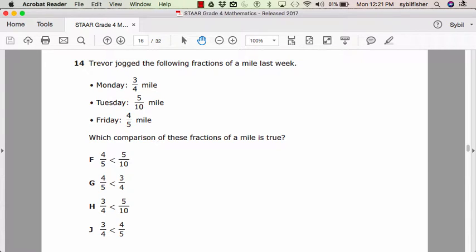F, four-fifths is less than five-tenths. G, four-fifths is less than three-fourths. H, three-fourths is less than five-tenths. Or J, three-fourths is less than four-fifths.